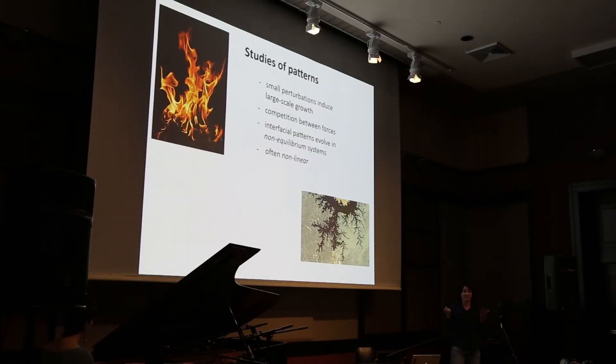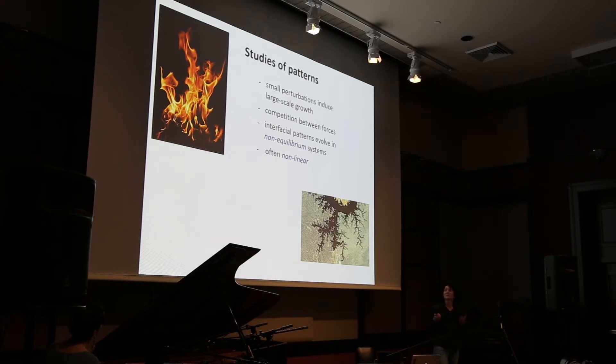Our lungs are another example of how such a branching network can actually increase the function of a material. If our lungs wouldn't have been formed like that but instead had the shape of just a sheet, then our lungs would have to be the size of two tennis courts in order to have the same function as they do now, where they fit into our body.